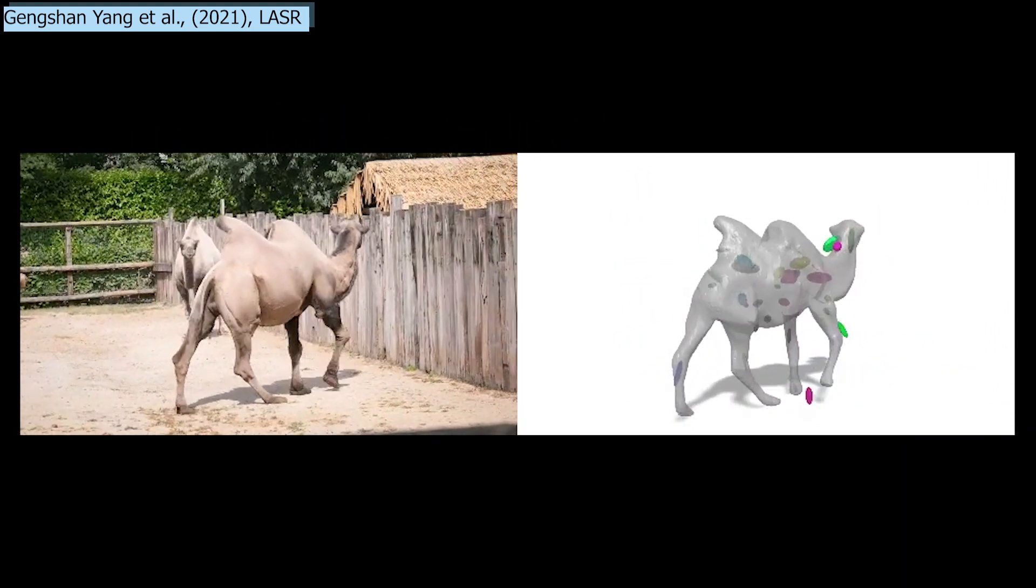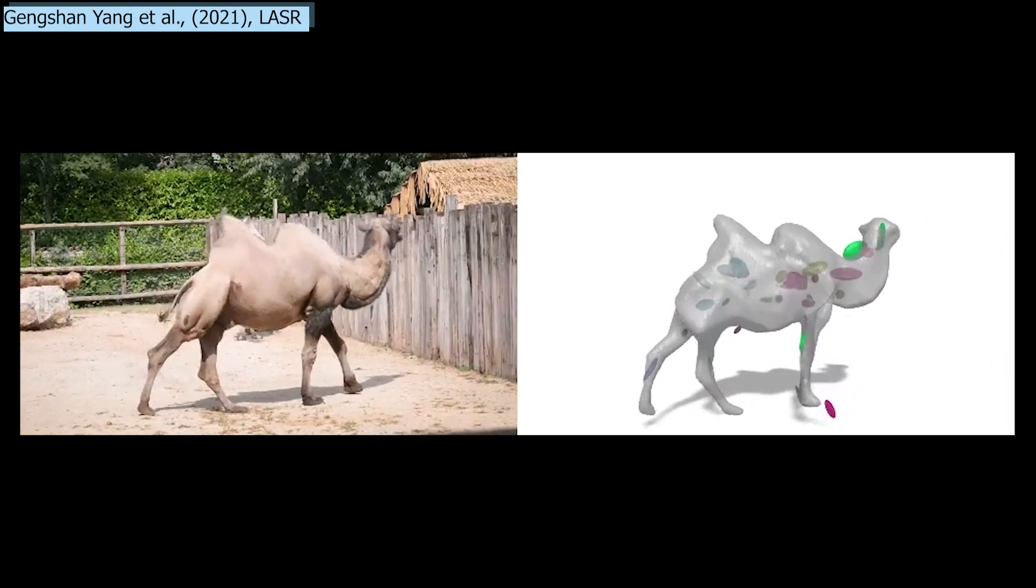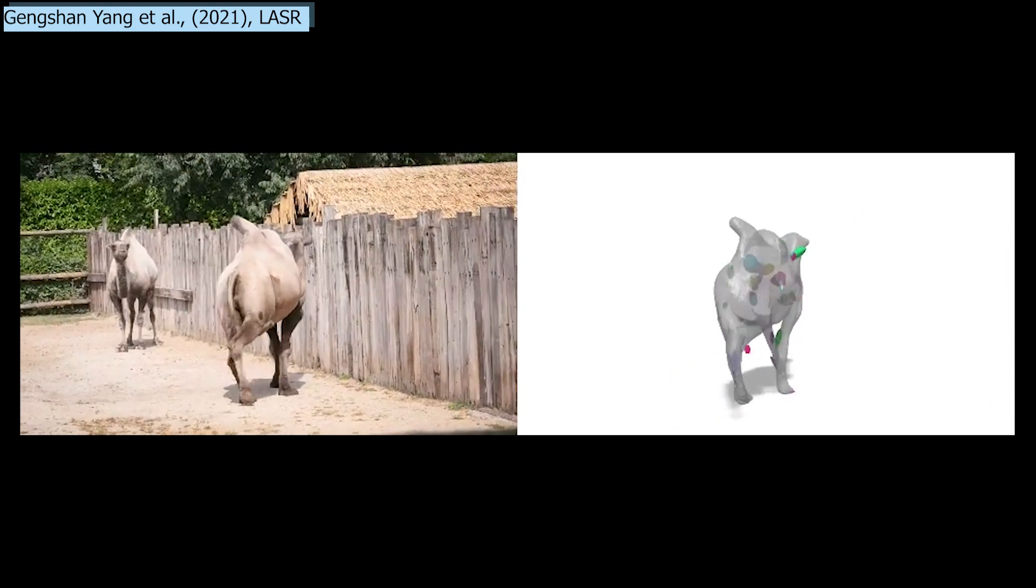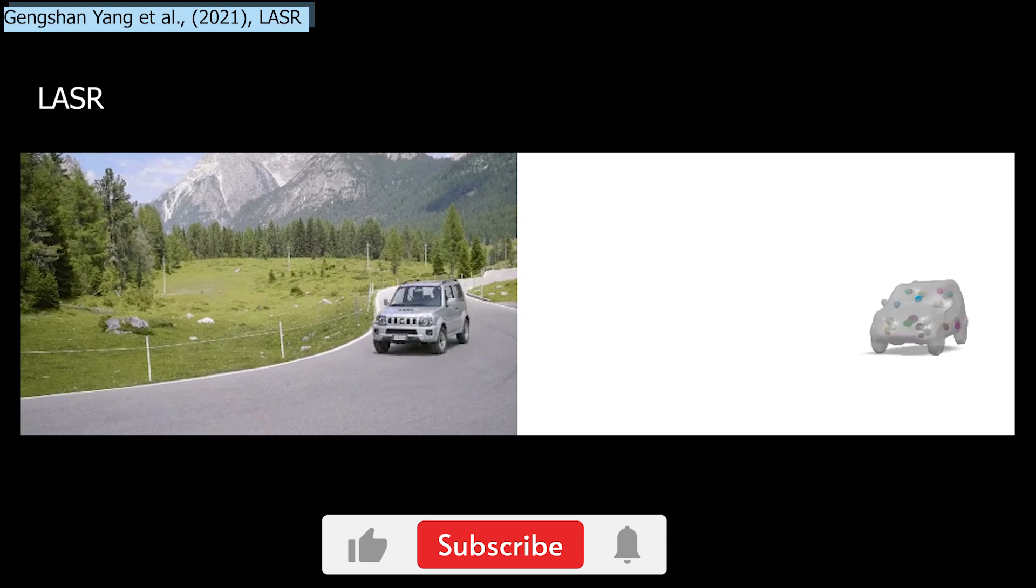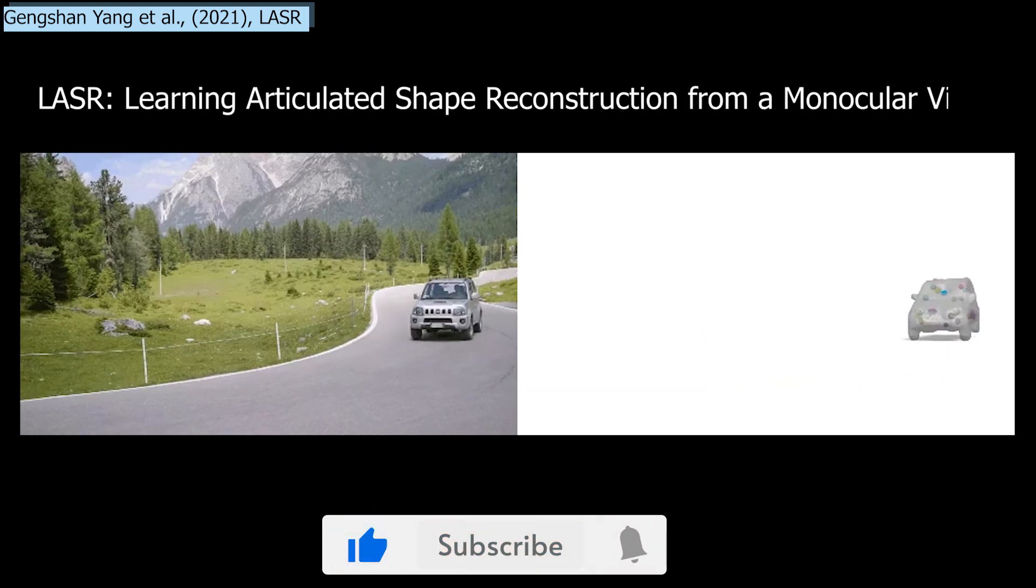This task of generating a 3D model based on a video or images is called 3D reconstruction, and Google Research, along with Carnegie Mellon University, just published a paper called LASER – Learning Articulated Shape Reconstruction from a Monocolor Video.